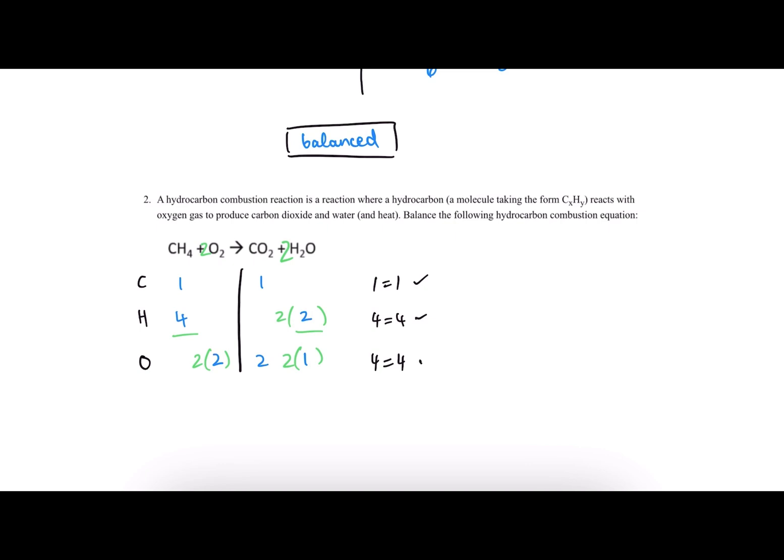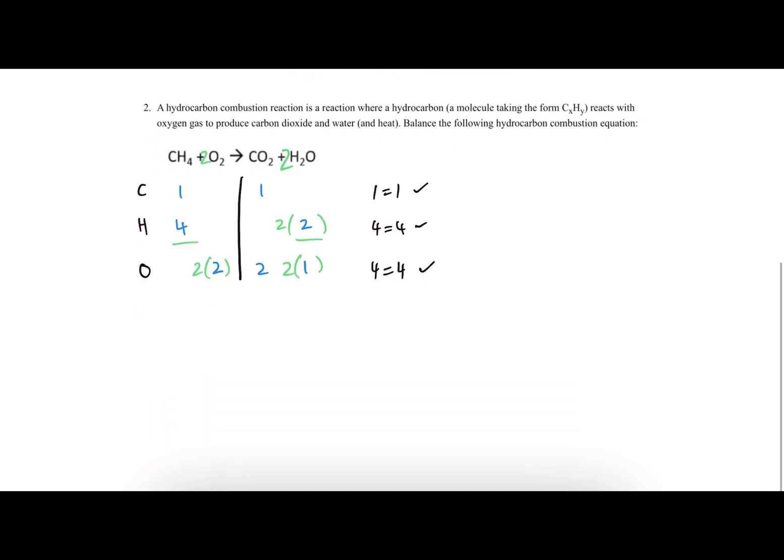Now everything checks out, and we have a balanced hydrocarbon combustion reaction equation that looks like the following with coefficients of one, two, one, and two going from left to right. So that is the answer to number two.